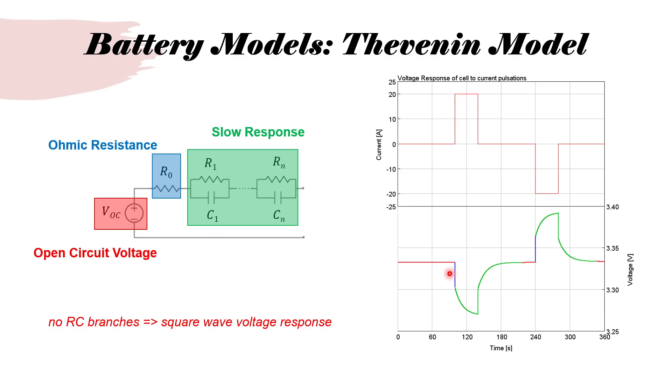You can see different color coding. There's a constant region, which represents open circuit voltage. Then there's a sudden drop represented by blue, which is defined by the ohmic resistance R0. And then there's a nonlinear region, which corresponds to diffusion and charge transfer resistance, which is captured by RC branches.